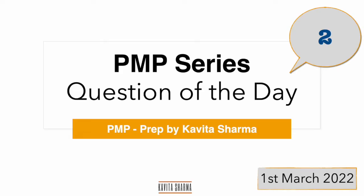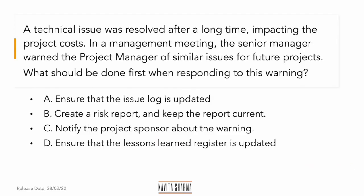Hi there, I'm back with the second question of the PMP series. My name is Gavadar Sharma. A technical issue was resolved after a long time, impacting the project cost. In a management meeting, the senior manager warned the project manager of similar issues for future projects. What should be done first when responding to this warning?